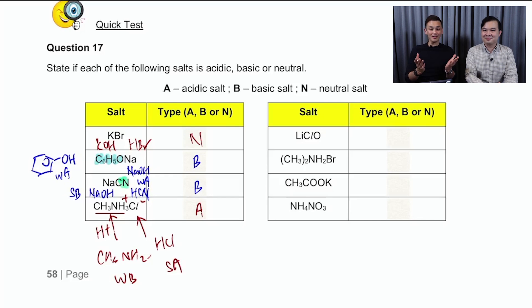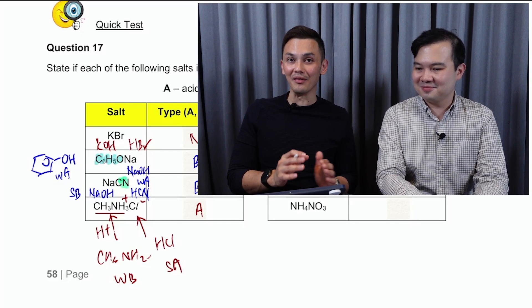So that's it, you can see, right? The shortcut method for us to know whether a salt is acidic, basic, or neutral, it is actually quite simple. Okay, so we're going to leave you with four more questions for you to self-attempt. So when you come back to class, our teacher is going to explain the four salts to you guys. All right, so we'll catch up with you in class very soon. Take care and bye!